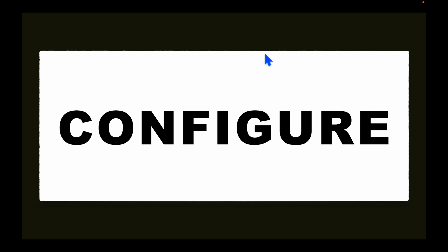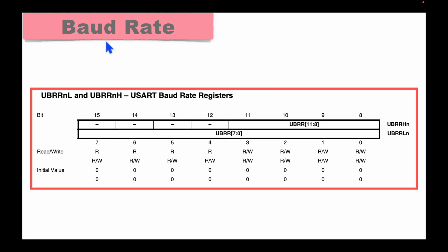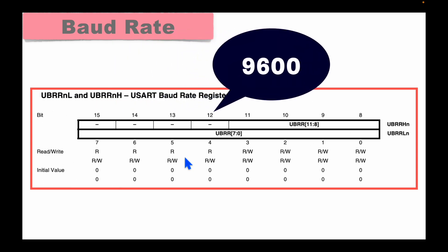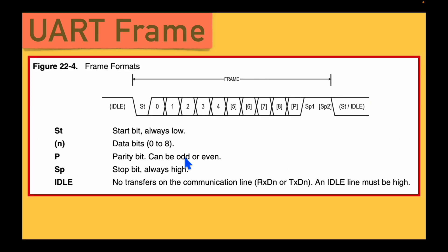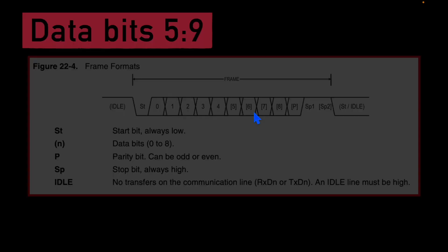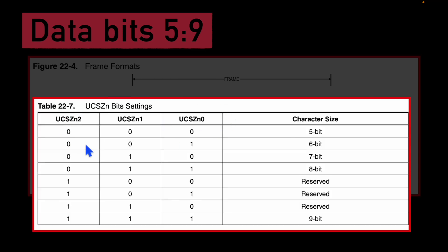To configure the UART, there are three control registers: A, B, and C. For baud rate, there is a special register where you directly write the desired value, such as 9600 or 115200. For data bits, you can select from 5 to 9 bits. Three bits in the control register handle this configuration — UCSZ0, UCSZ1 (in control register C, bits 1 and 2) and UCSZ2 (in control register B, bit 2).